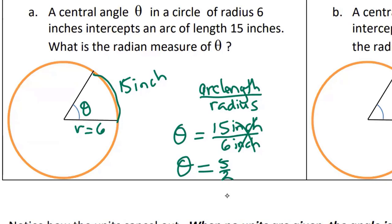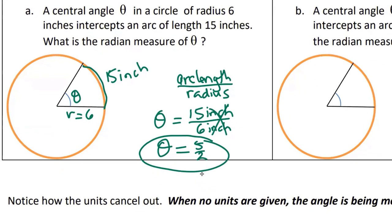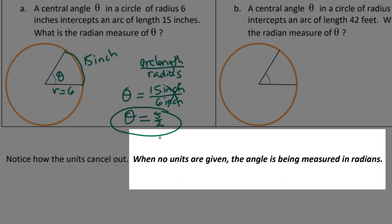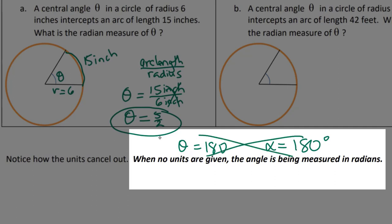Notice that the inches — the units — cancel out. Radians don't actually have any units. Sometimes we'll write the word 'radian' to indicate that it is a radian, but in reality they don't have any units because it's a ratio of inches to inches. So if there are no units indicated, it's radians. For example, theta equals 180 and alpha equals 180 with a degree symbol are two completely different angles — not equal, not the same. If you don't have a degree symbol, then it's radians. That's just a side note about notation and units.